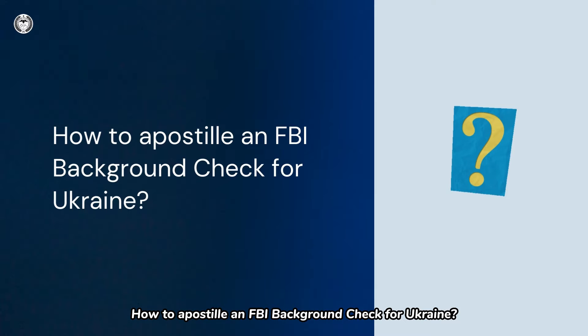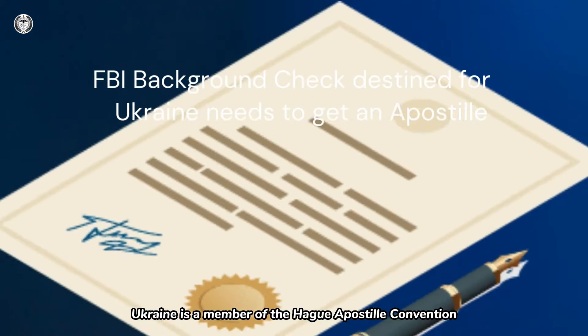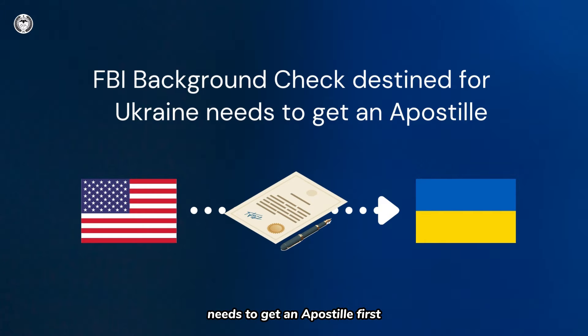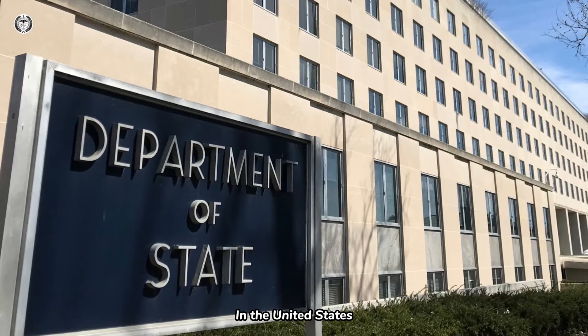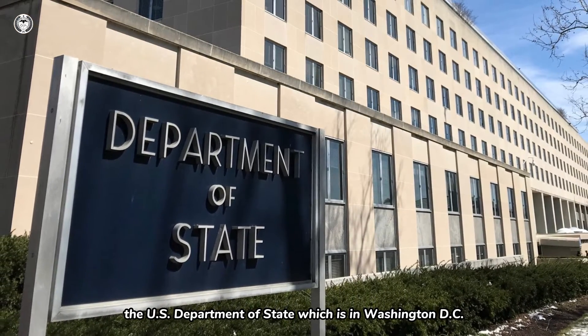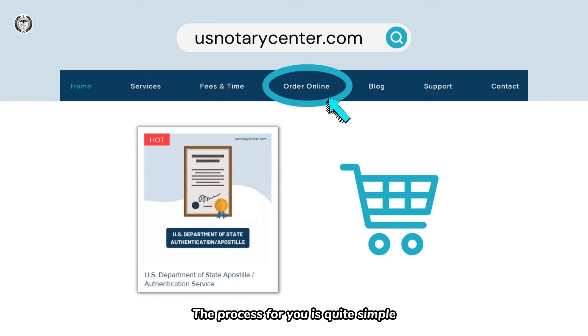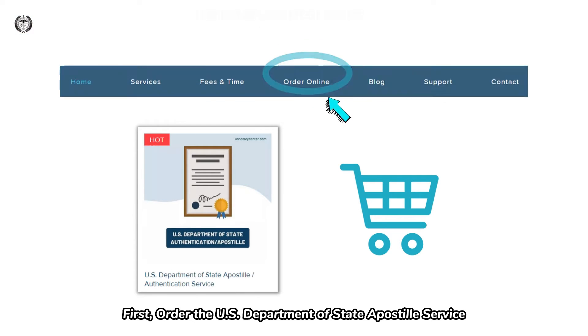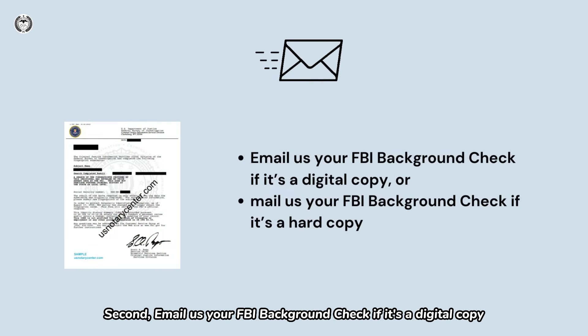How to Apostille an FBI Background Check for Ukraine? Ukraine is a member of the Hague Apostille Convention. FBI Background Check destined for Ukraine needs to get an Apostille first. In the United States, the Apostille of FBI Background Check can only be processed by the U.S. Department of State, which is in Washington, D.C. The process for you is quite simple. First, order the U.S. Department of State Apostille Service. Second, email us your FBI Background Check if it's a digital copy, or mail us your FBI Background Check if it's a hard copy.